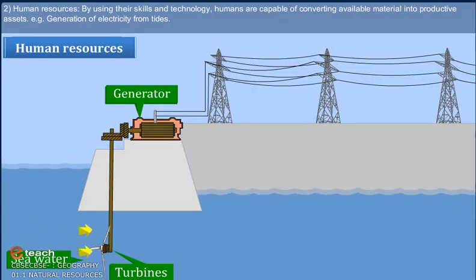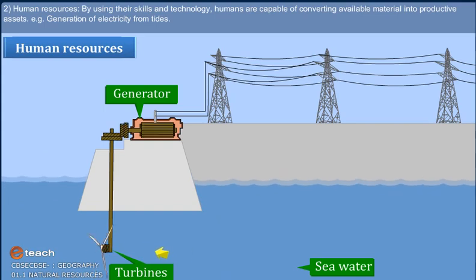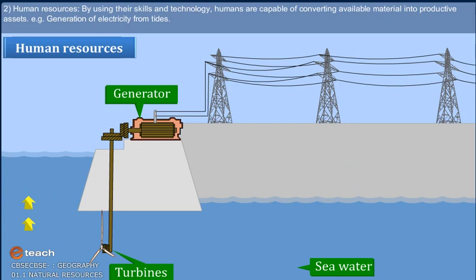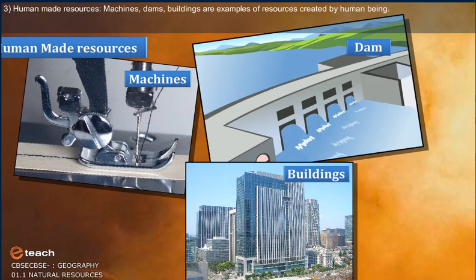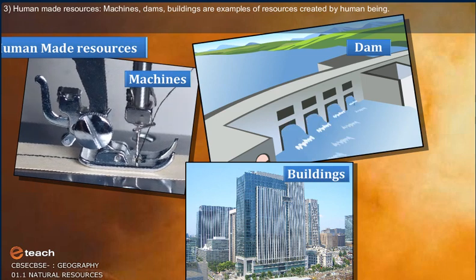Human Resources, by using skill and technology, are capable of converting available material into productive assets. For example, generation of electricity from tides. Human Made Resources include machines, dams, and buildings, which are examples of resources created by human beings.